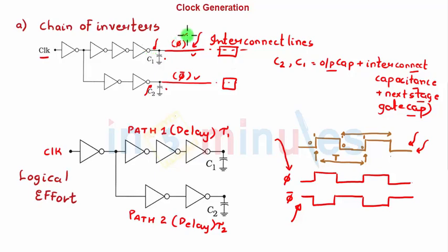Now if you're smart enough, you'll ask me, technically you want phi and phi bar when phi is high, phi bar to be low. But here there are four inverters and here there are three inverters, that means there'll be some delay, correct?